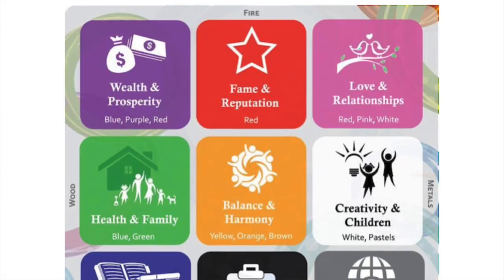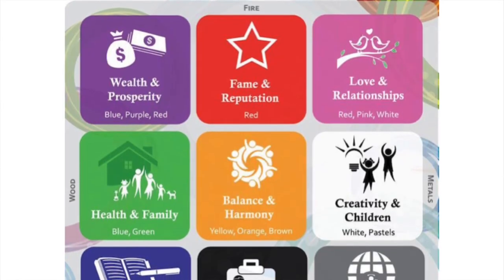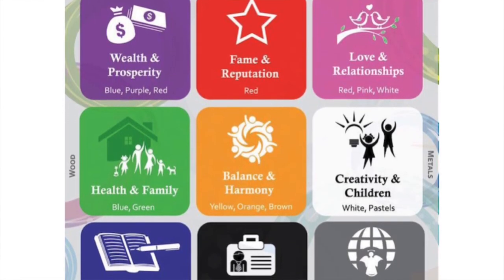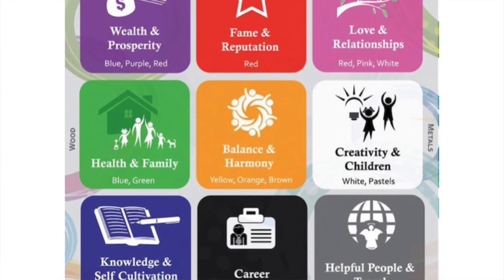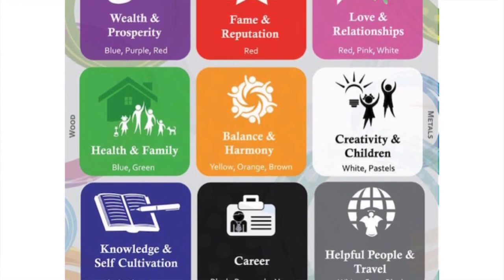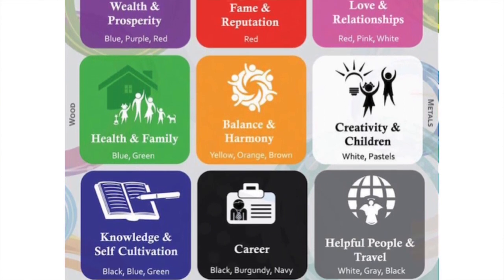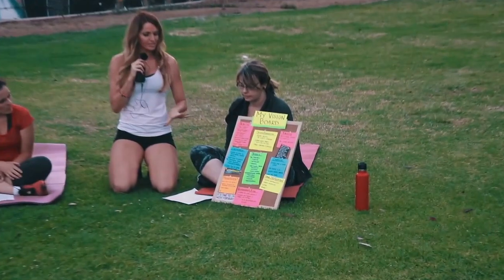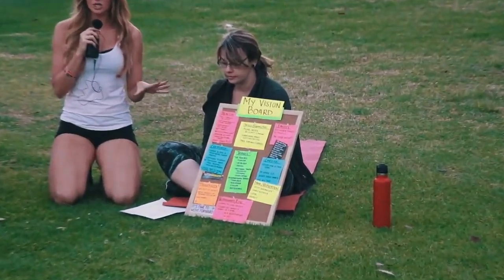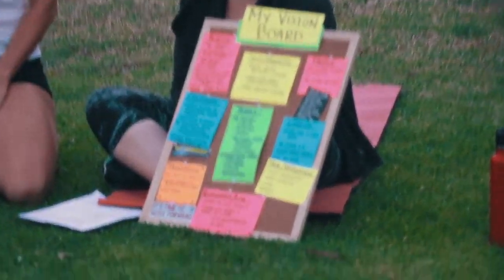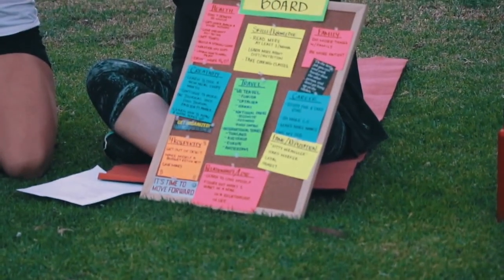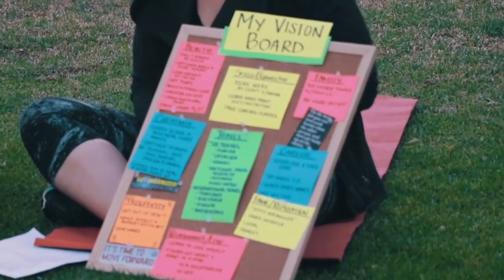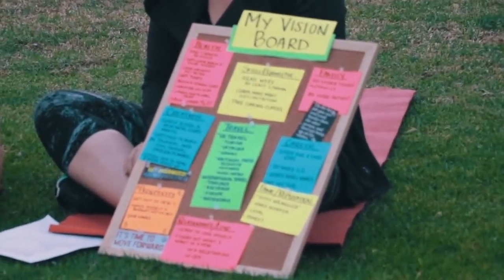Her vision board has health, creativity, prosperity, skills and knowledge, travel, relationships and love, family, career, fame and reputation. Everybody is going to have their own vision board — some are going to be more pictures, some more words. Everybody has a little bit of a different vision.